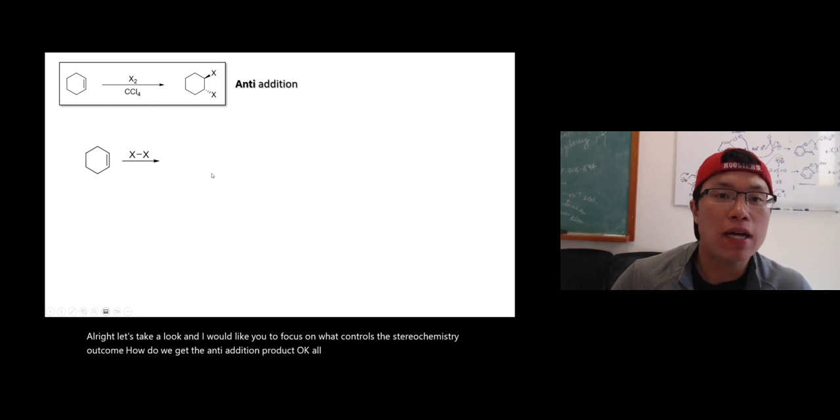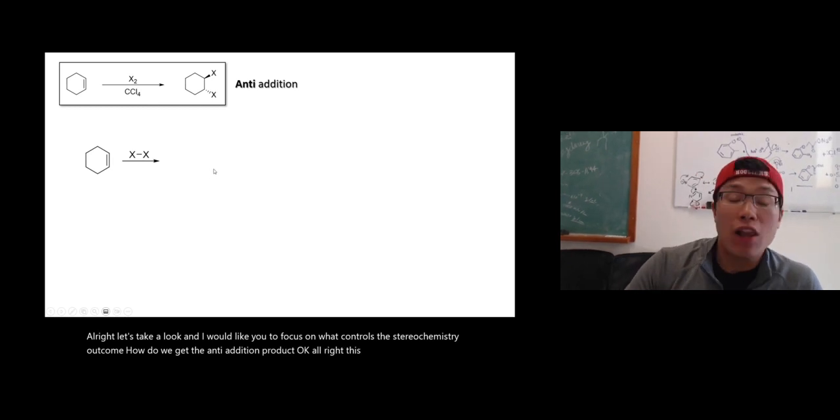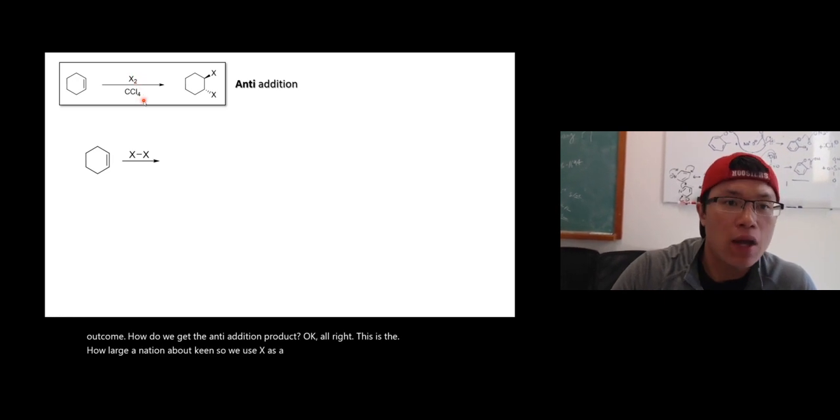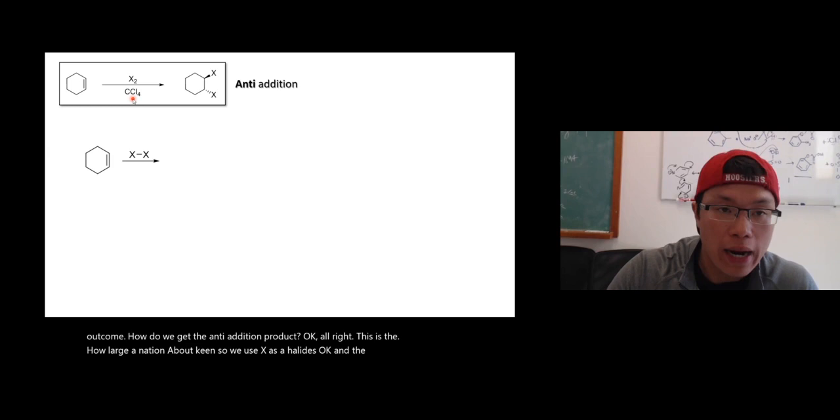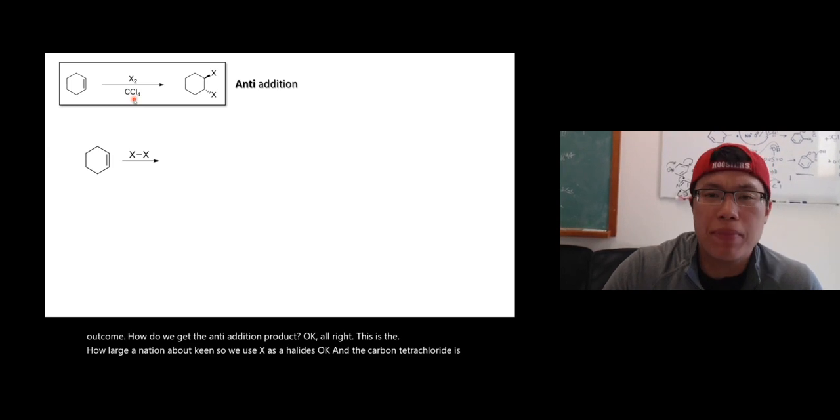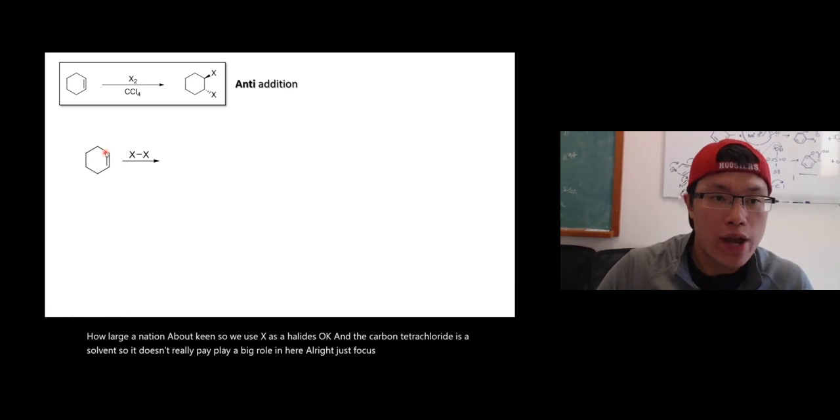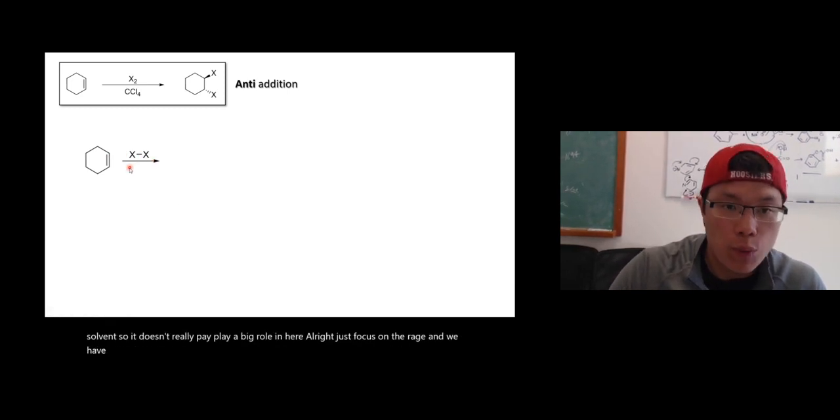Alright, this is the halogenation of alkene, so we use X2 as halides, and the carbon tetrachloride is a solvent, so it doesn't really play a big role in here. Alright, just focus on the reagent. We have alkene, we have halogens, chloride, bromide, iodide.